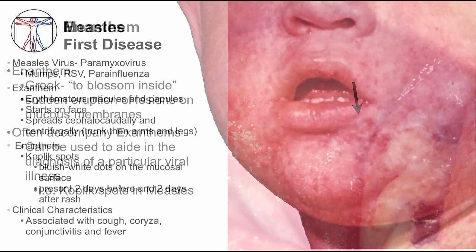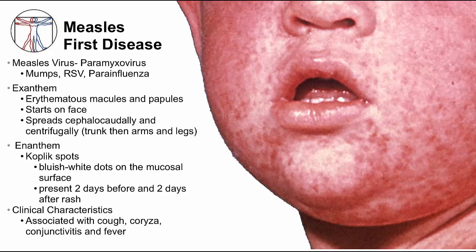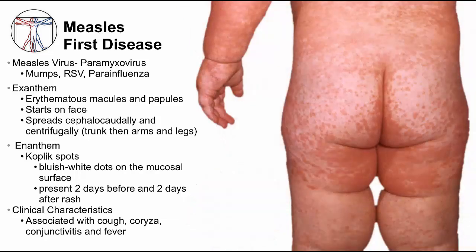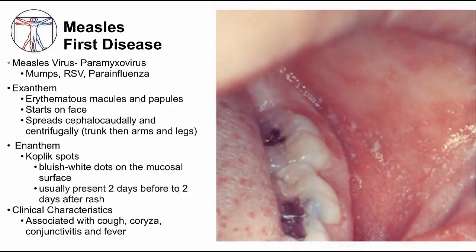For the next several slides, I will give details of each classic childhood exanthem. First disease is measles. The exanthem has a characteristic pattern of appearance and spread — it starts on the forehead at the hairline and behind the ears, then spreads to the entire face, and then downward to the trunk and extremities over several days, with coalescing of the rash predominantly on the face and other regions, as seen on the thighs of this child. The enanthem, called Koplik spots, erupts before the exanthem is noticeable and quickly sloughs as the exanthem spreads.